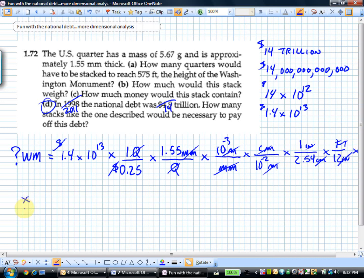We've got feet now. What do we know about the Washington Monument? We know it's 575 feet tall, so one Washington Monument is equivalent to 575 feet. Feet cancel feet, and we've ended up with Washington Monuments.